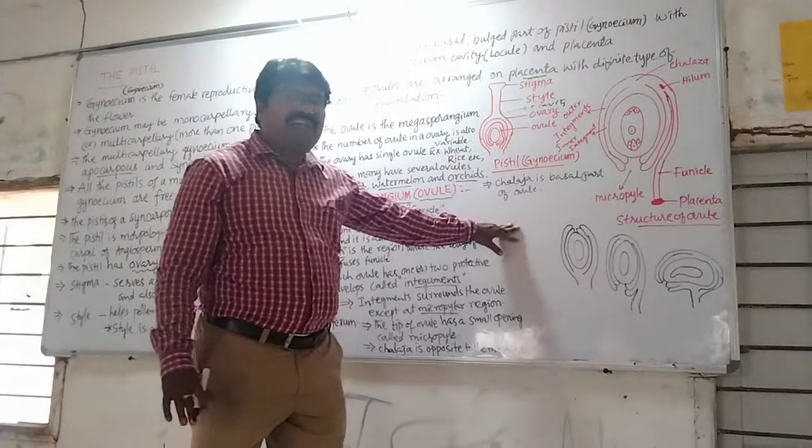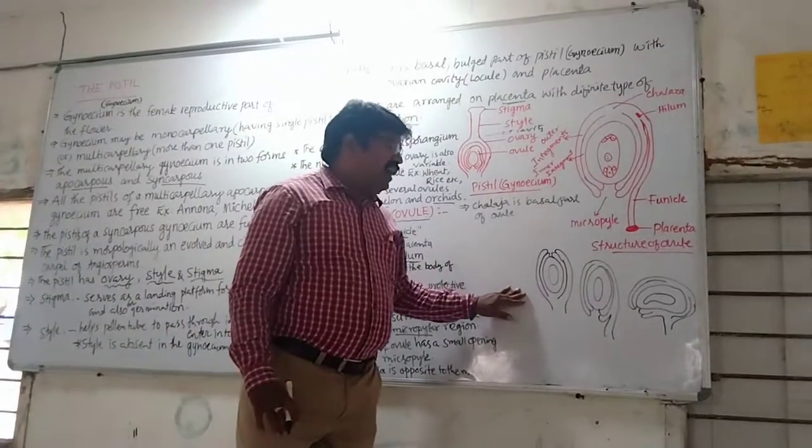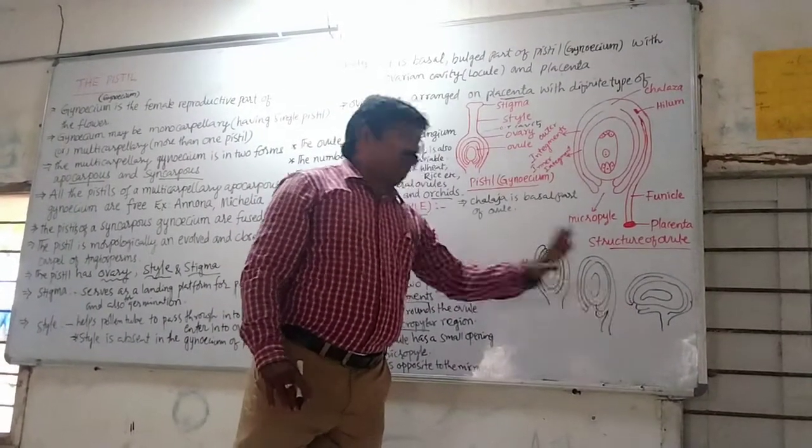The ovules are three types: orthotropous, anatropous, and campylotropous.